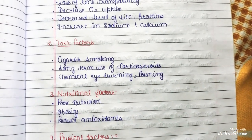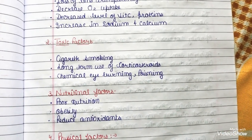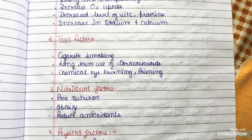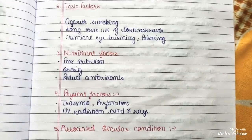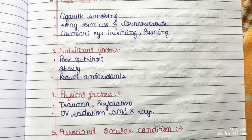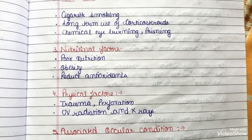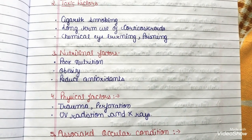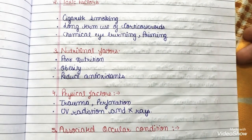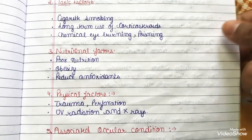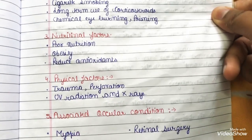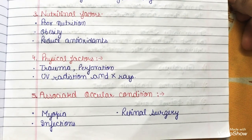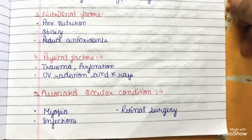Nutritive factors may appear as poor nutrition, obesity, and reduced antioxidants. Physical factors include trauma, perforation, UV radiation, and X-rays.